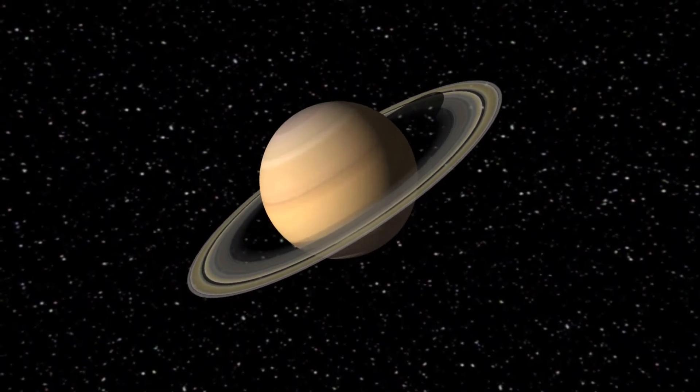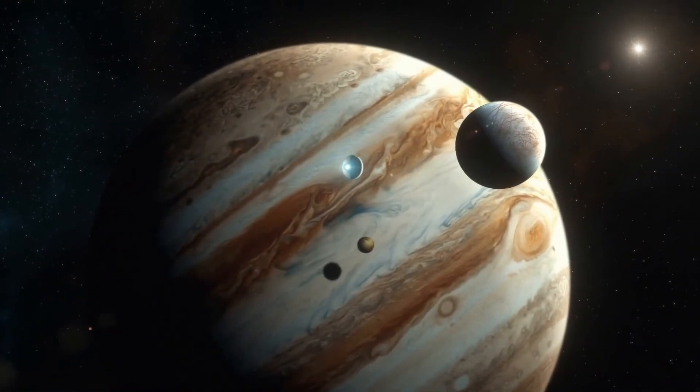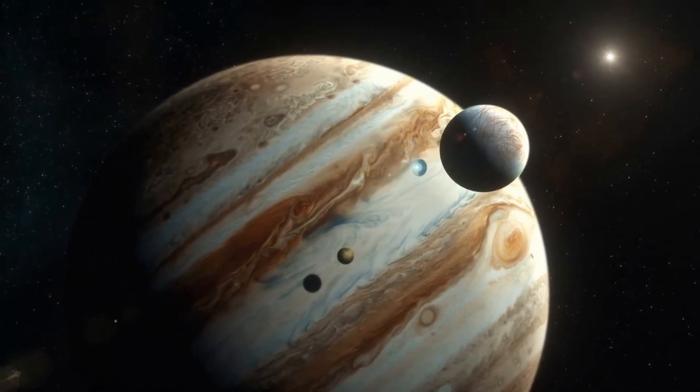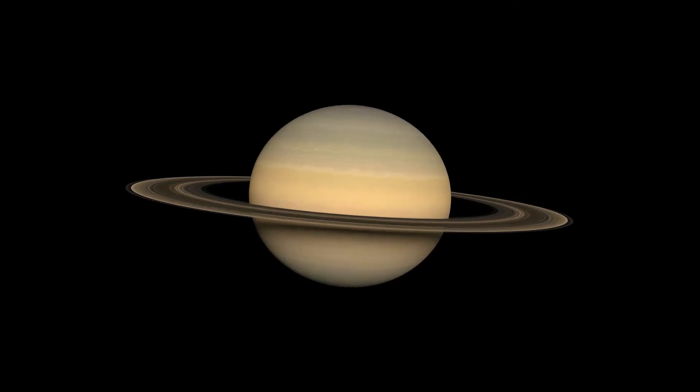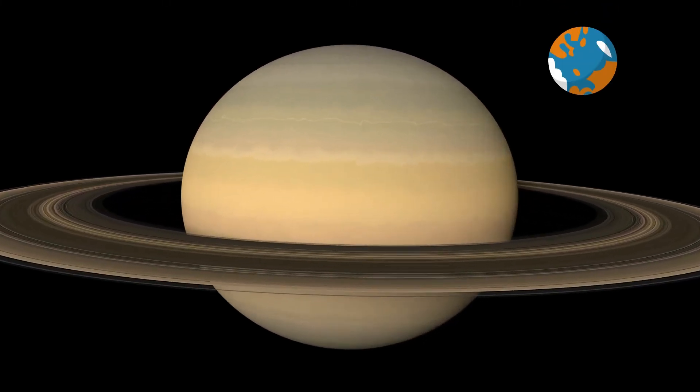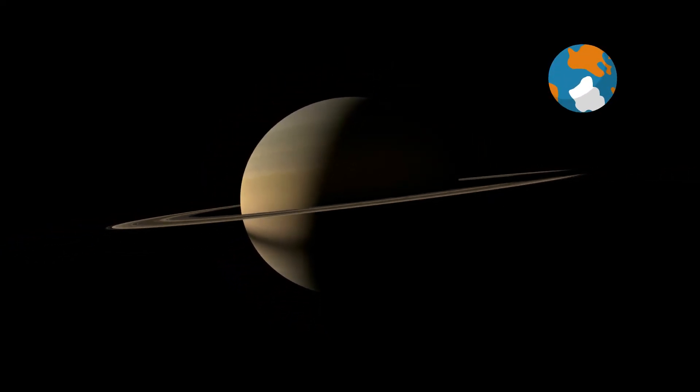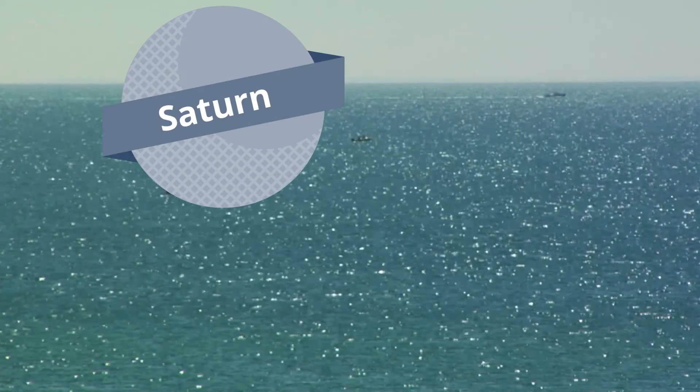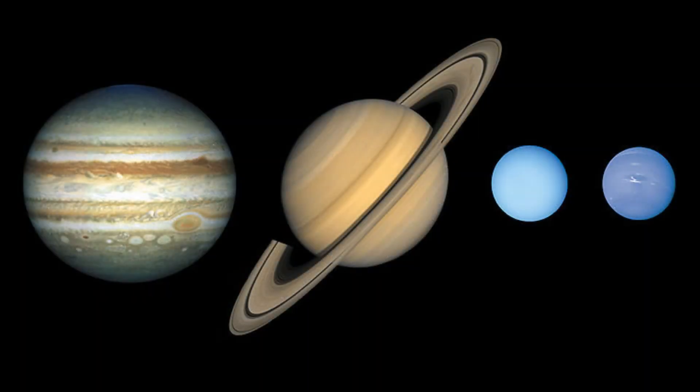The gas giants also have a very low density. Jupiter has a density of only 1.3 grams per cubic centimeter and Saturn has a density of 0.7 grams per cubic centimeter, compared to Earth's density which is around 5 to 5.5 grams per cubic centimeter. This means that Saturn would float and the other gas giants would just barely sink.